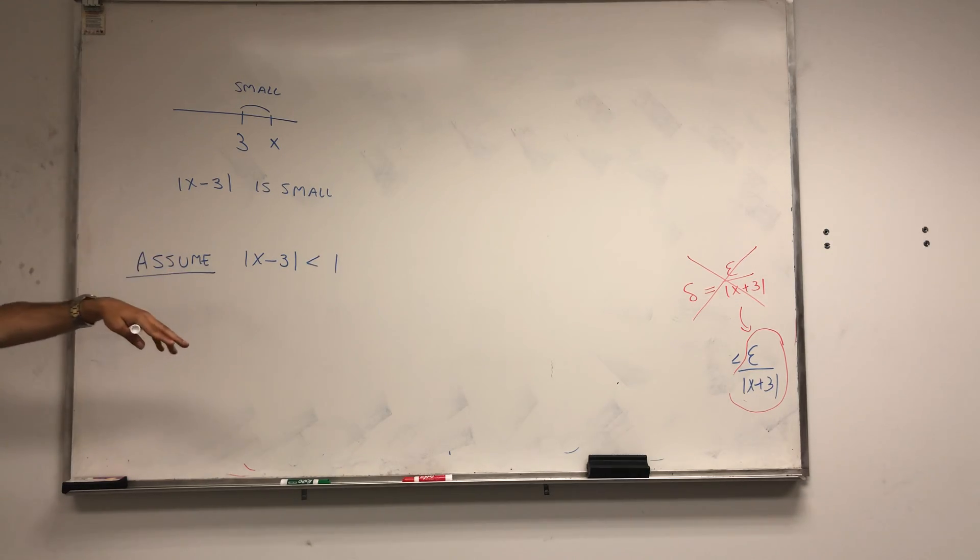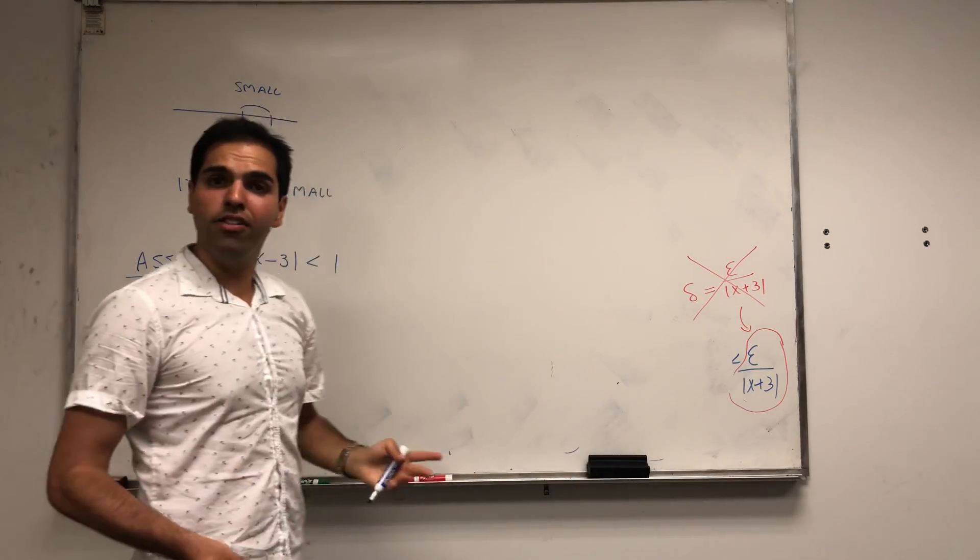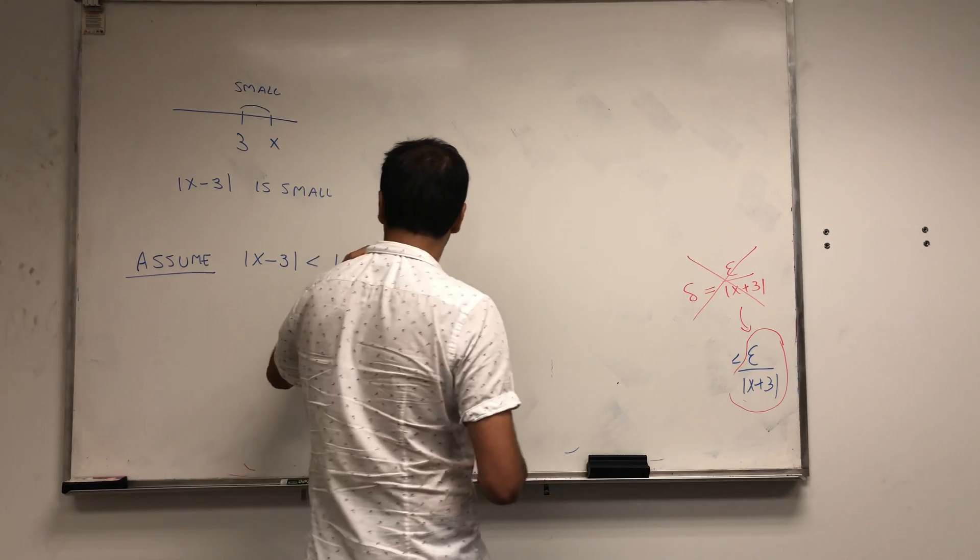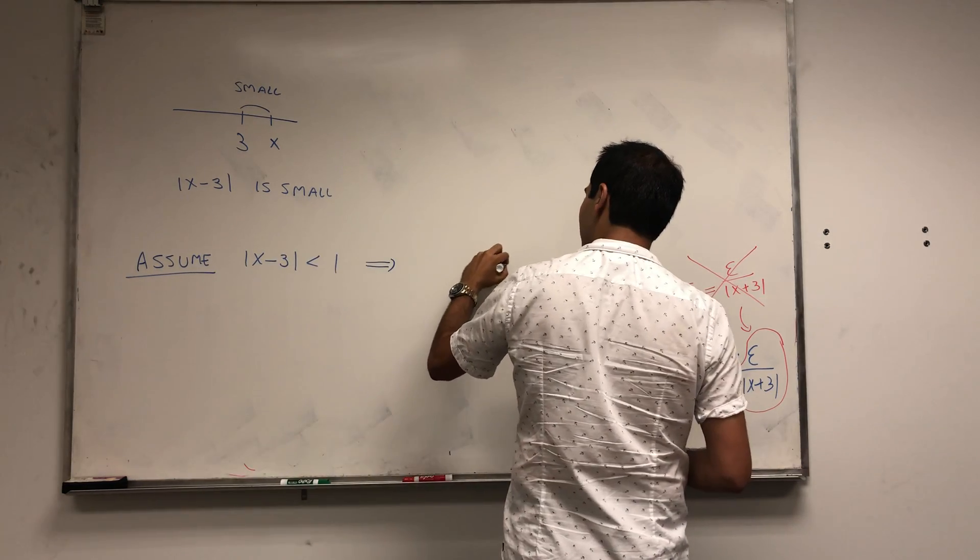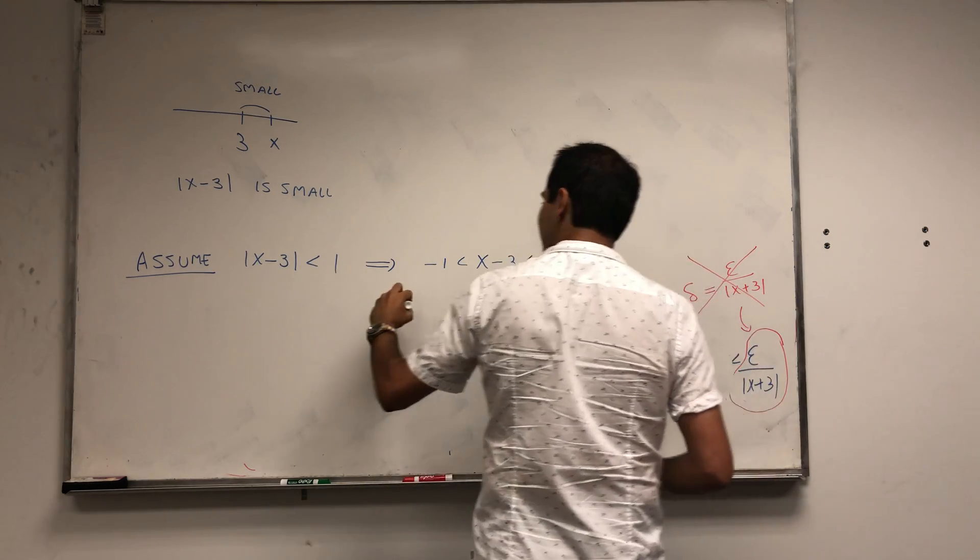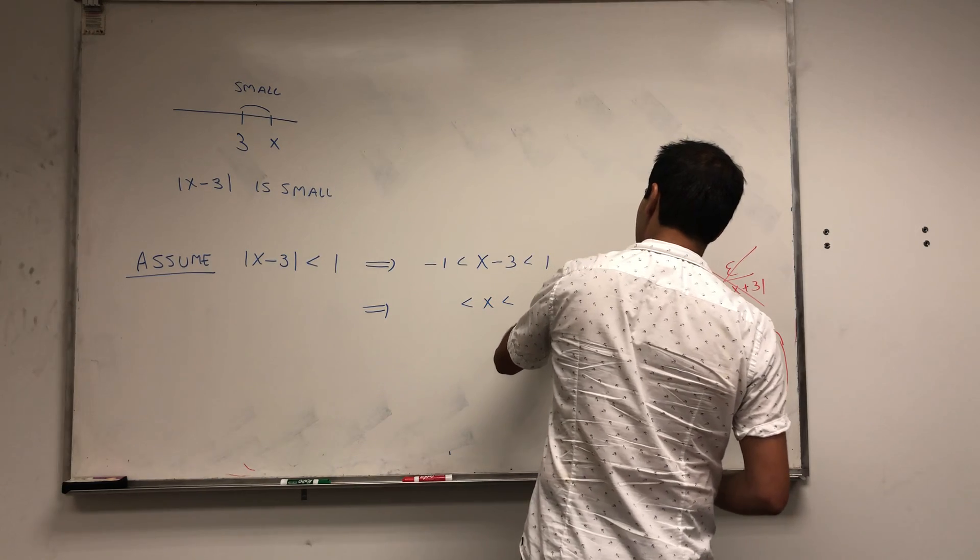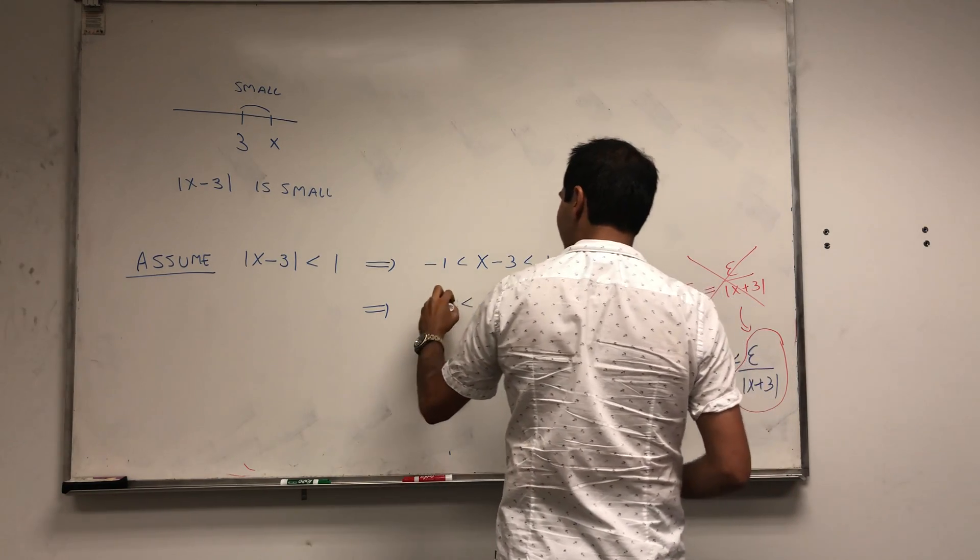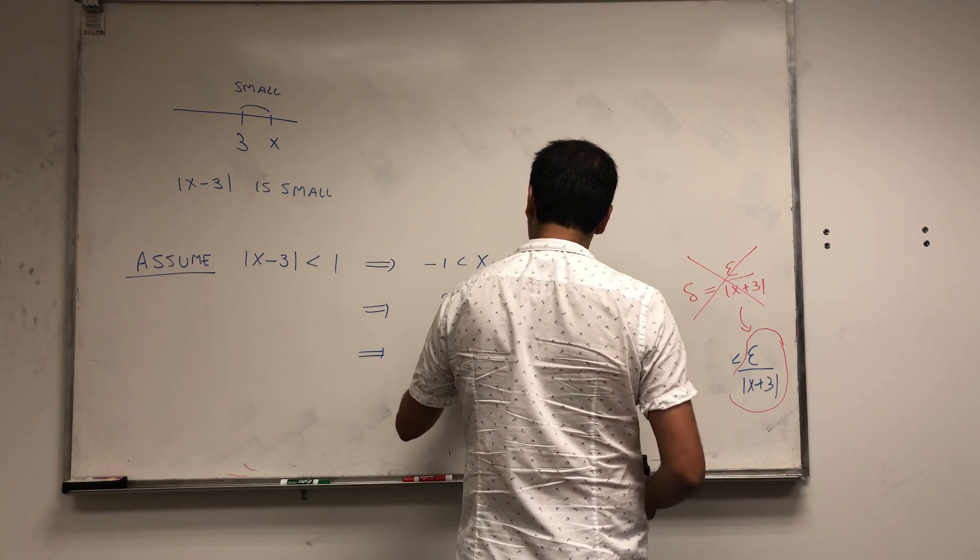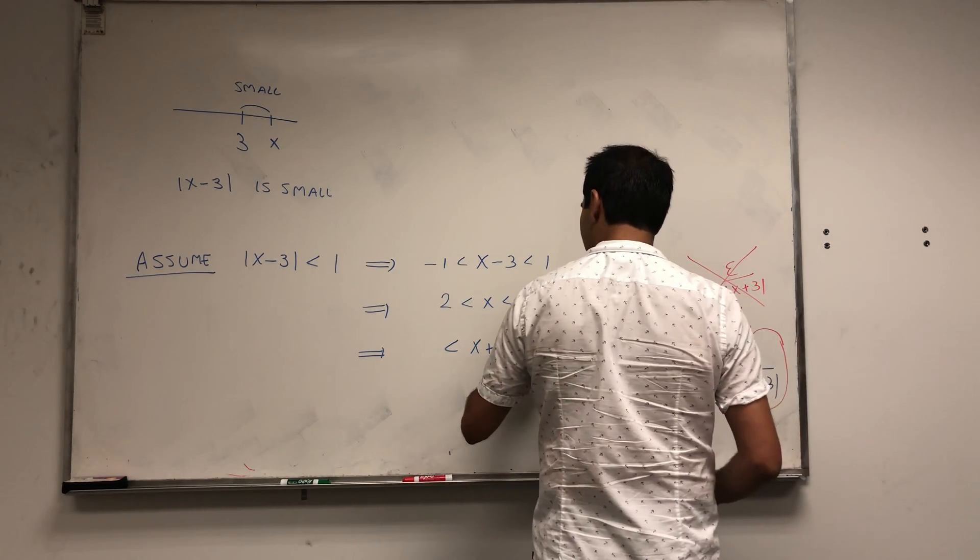It turns out you can use this equation to solve for x plus 3 and find a delta that doesn't depend on x. x minus 3 becomes between minus 1 and 1. Add 3 to both sides to get x is between 2 and 4. Then x plus 3, if you add 3, is between 5 and 7.